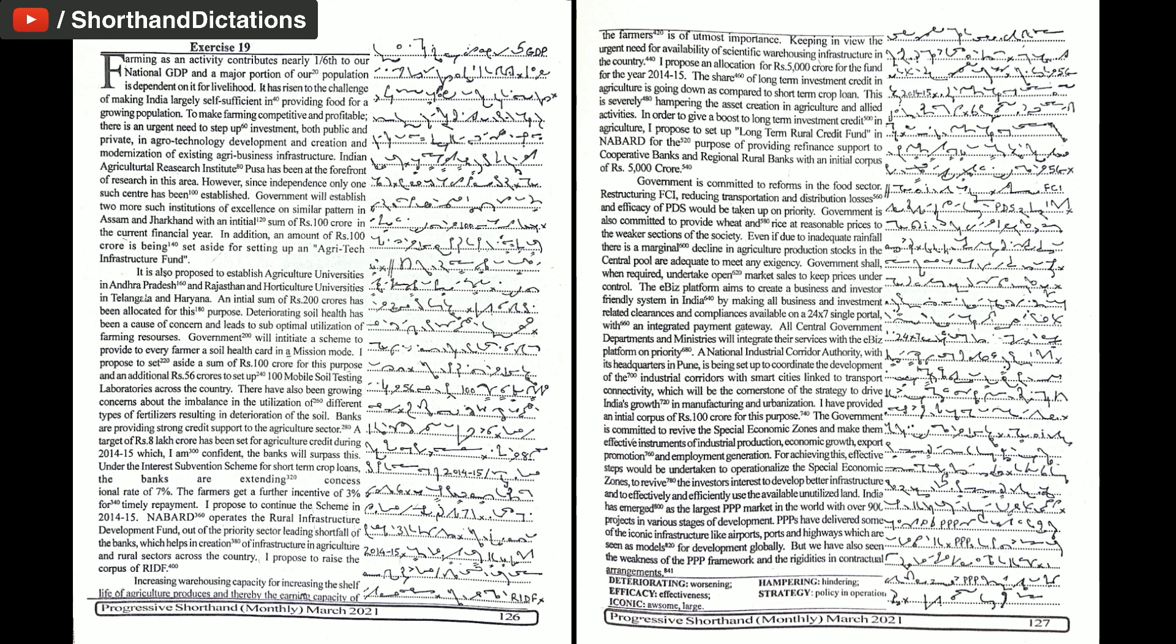The farmers get a further incentive of 3% for timely repayment. I propose to continue the scheme in 2014-15. NABARD operates the Rural Infrastructure Development Fund out of the priority sector lending shortfall of the banks which helps in creation of infrastructure in agriculture and rural sectors across the country. I propose to raise the corpus of RIDF. Increasing warehousing capacity for increasing the shelf life of agriculture products and thereby the earning capacity of the farmers is of utmost importance.